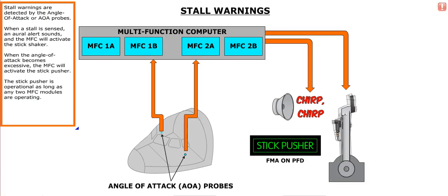Stall warnings are detected by the angle of attack, or AOA probes. When a stall is sensed, an oral alert sounds and the MFC will activate the stick shaker. When the angle of attack becomes excessive, the MFC will activate the stick pusher. The stick pusher is operational as long as any two MFC modules are operating.